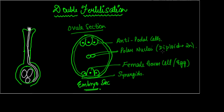Now let us study how double fertilization takes place. When the pollen grain lands onto the stigma, it will grow the pollen tube in response to certain chemicals secreted by the stigma. If the pollen grain is of a plant of the same species, then in response to those chemicals it is going to grow the pollen tube.